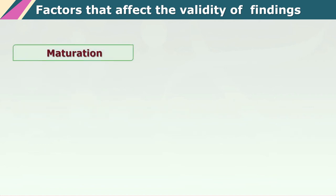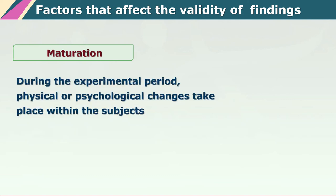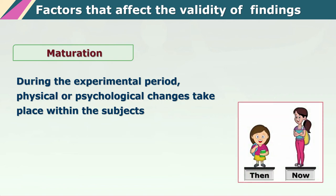Another factor is maturation. One must remember that as the experiment proceeds, time is passing and there are changes happening in the subject himself or herself. Has this maturation factor played a role in actually changing the kind of dependent variable scores delivered by the subject? That is something the experimenter must look at very carefully. So history and maturation are two factors which might interfere with the accuracy of your experimental findings and one must take care that these are controlled for.